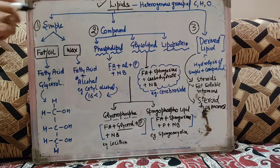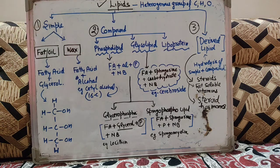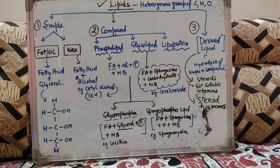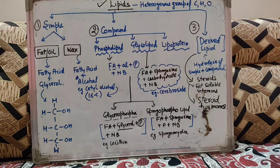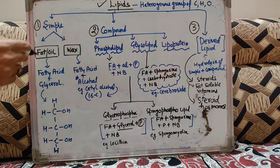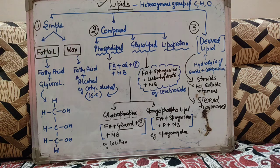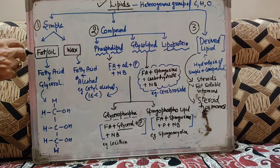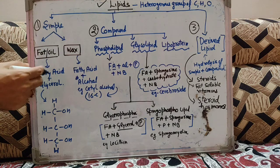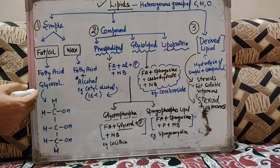तो आईए हम देखते हैं simple lipids हम किसको कहेंगे. Simple lipids में हमारा common आता है fat and oil, which is very common. Fat जो है room temperature पर solid होता है, और oil जो होते हैं room temperature पर liquid form में होते हैं. Fat and oil पहली category आ जाएंगे simple lipids के अंदर. They consist of fatty acid and glycerol.